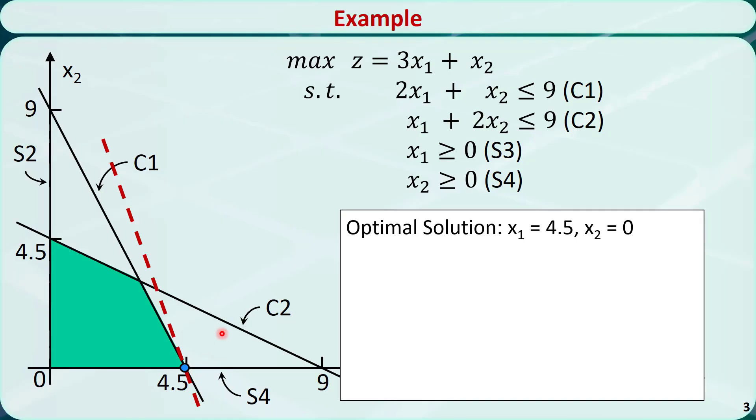So, it is the optimal solution, x1 is equal to 4.5 and x2 is equal to 0.